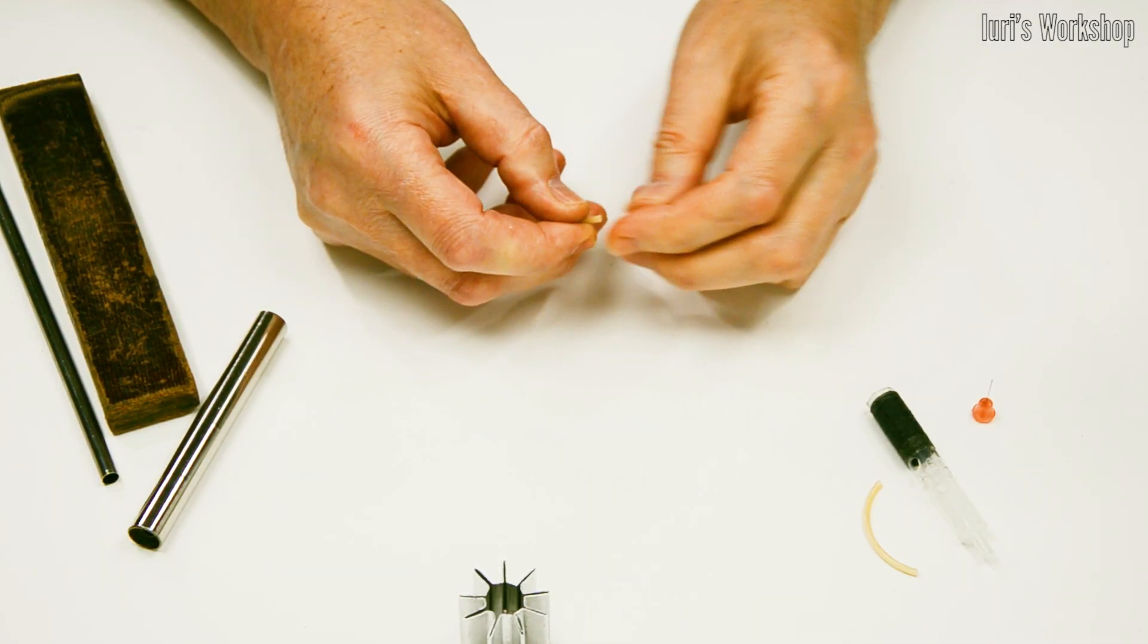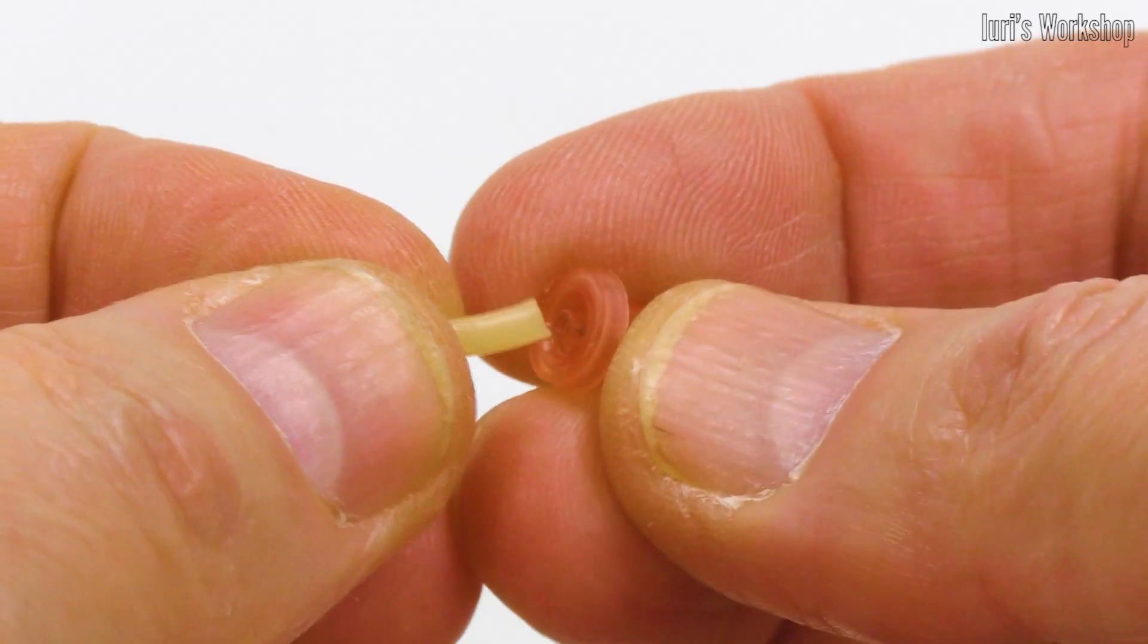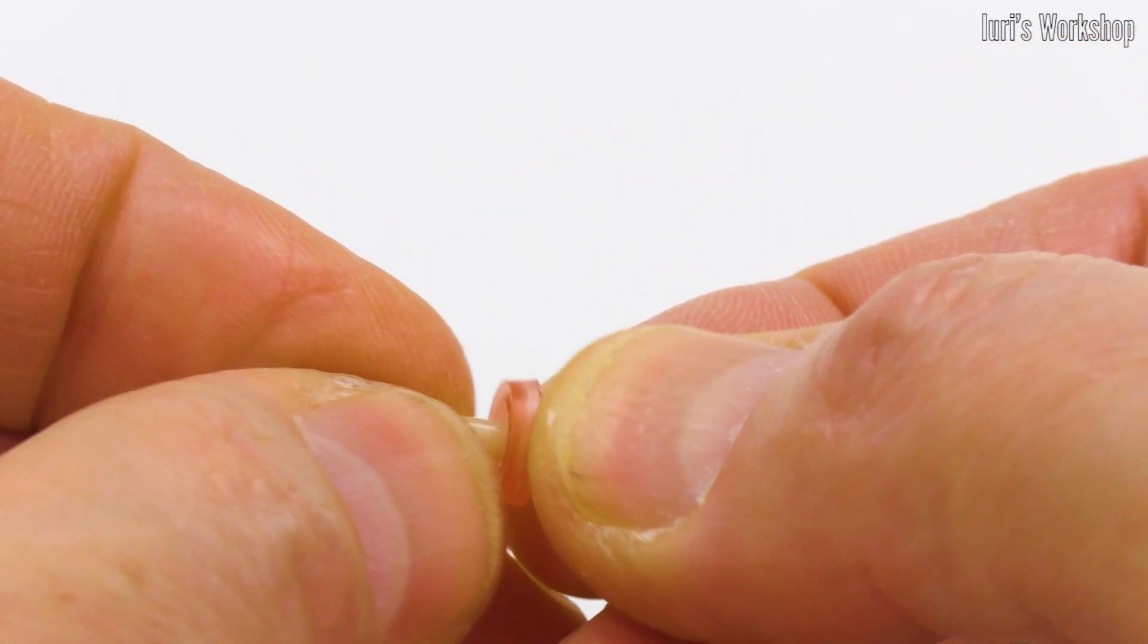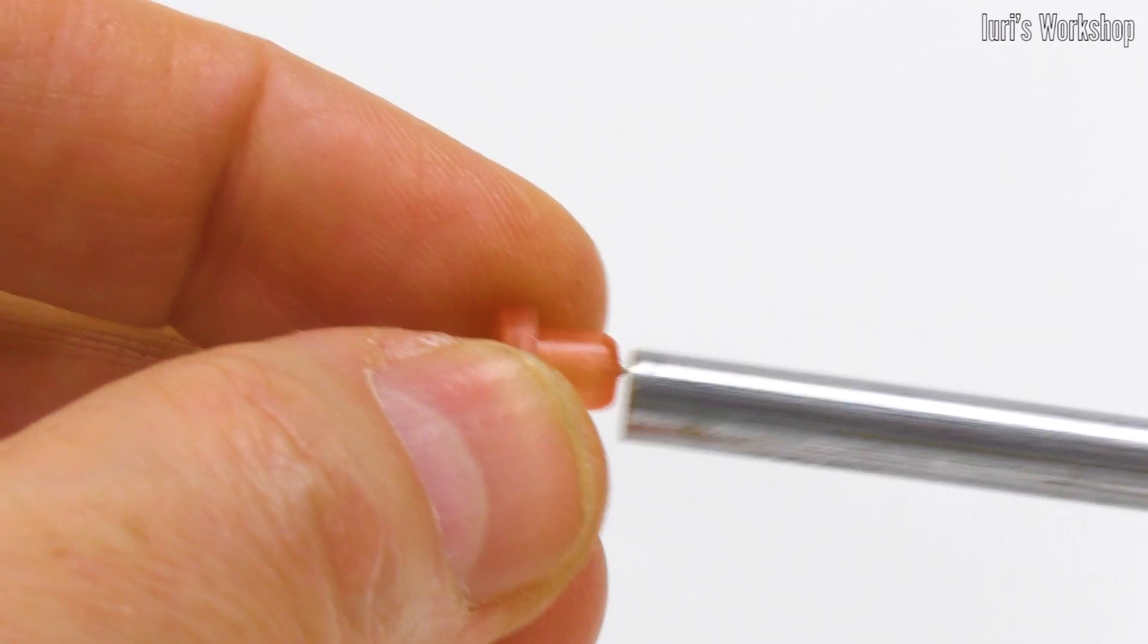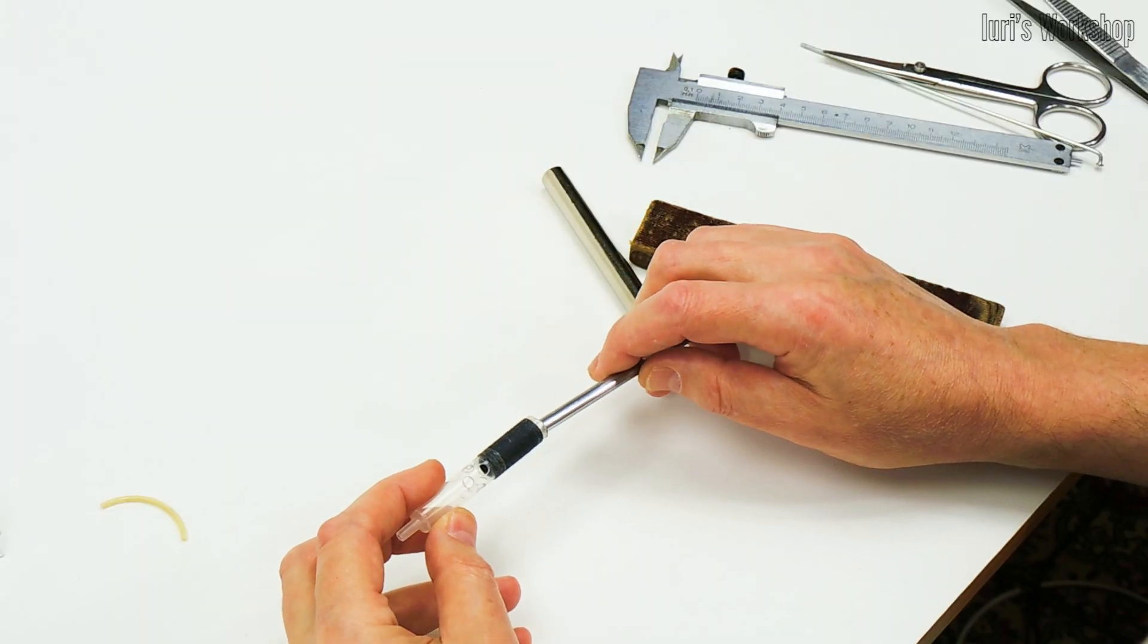I secured the needle from the insulin syringe with a 2.5 millimeter piece of mounting PVC tubing. But you can activate your creativity and find another solution.